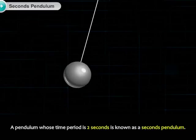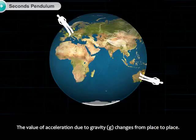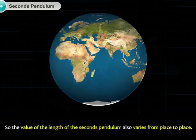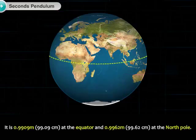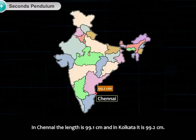A pendulum whose time period is 2 seconds is known as a seconds pendulum. The value of acceleration due to gravity (g) changes from place to place, so the length of the seconds pendulum also varies. It is 0.9909 m (99.09 cm) at the equator and 0.9962 m (99.62 cm) at the north pole. In Chennai, the length is 99.1 cm and in Kolkata, it is 99.2 cm.